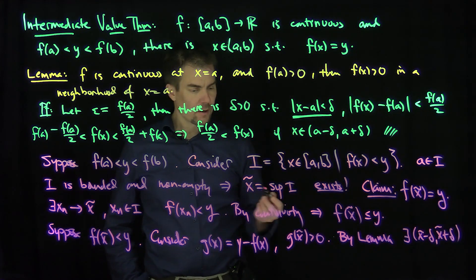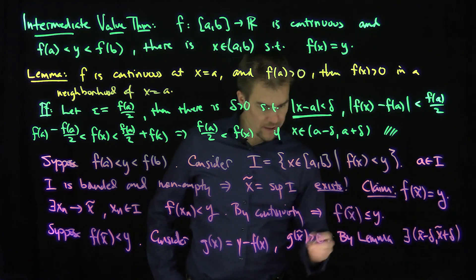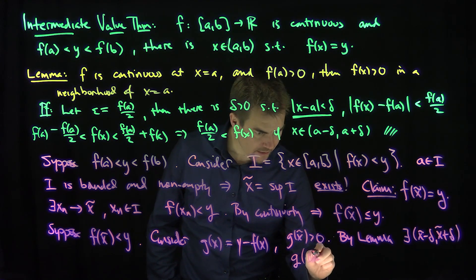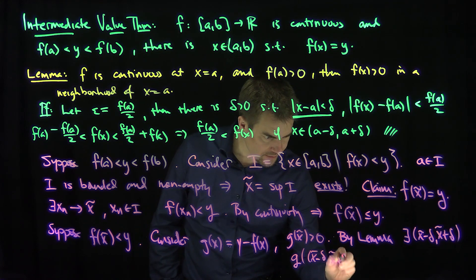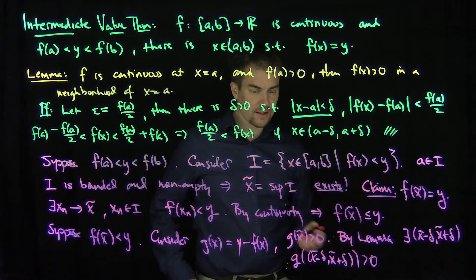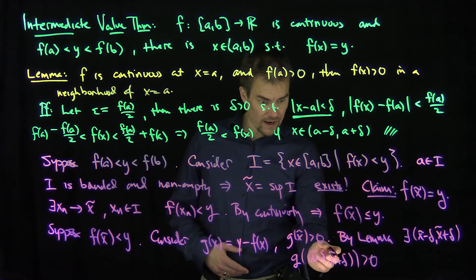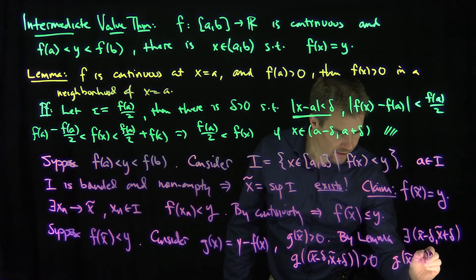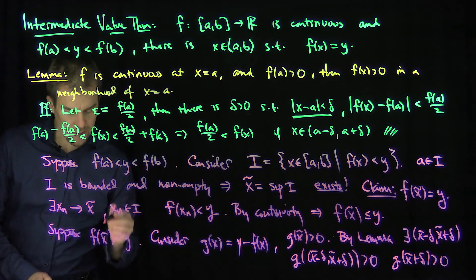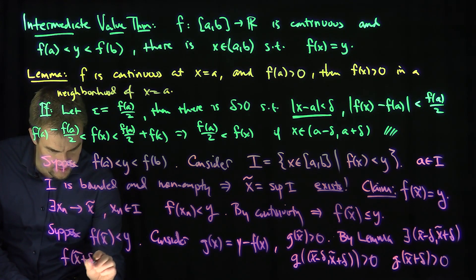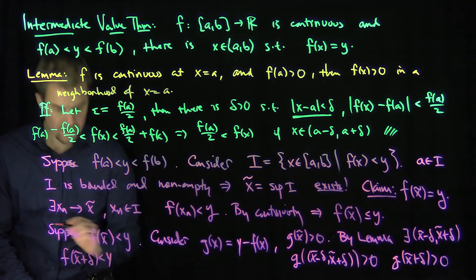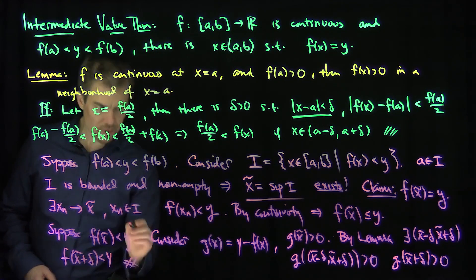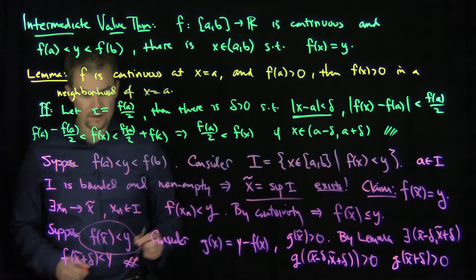where g on this interval is still greater than zero. That says g(x tilde plus delta) is greater than zero, which tells me that f(x tilde plus delta) is less than y. That's a contradiction because x tilde is the supremum. So it cannot be the case that f(x tilde) is strictly less than y.